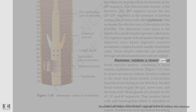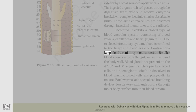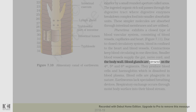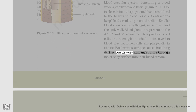Pheretima exhibits a closed type of blood vascular system consisting of blood vessels, capillaries, and heart (figure 7.11). Due to the closed circulatory system, blood is confined to the heart and blood vessels. Contractions keep blood circulating in one direction. Smaller blood vessels supply the gut, nerve cord, and the body wall. Blood glands are present on the 4th, 5th, and 6th segments. They produce blood cells and hemoglobin which is dissolved in blood plasma. Blood cells are phagocytic in nature. Earthworms lack specialized breathing devices. Respiratory exchange occurs through the moist body surface into their bloodstream.